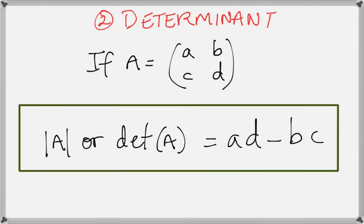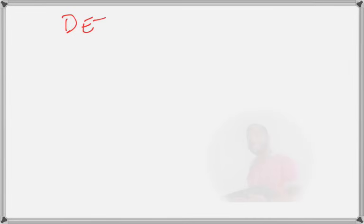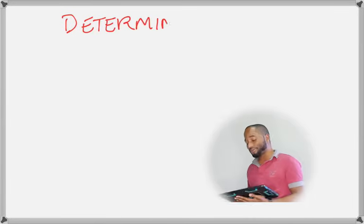Ad is going to be multiplied and we are going to subtract bc. So we multiply the two diagonals and subtract them from each other.